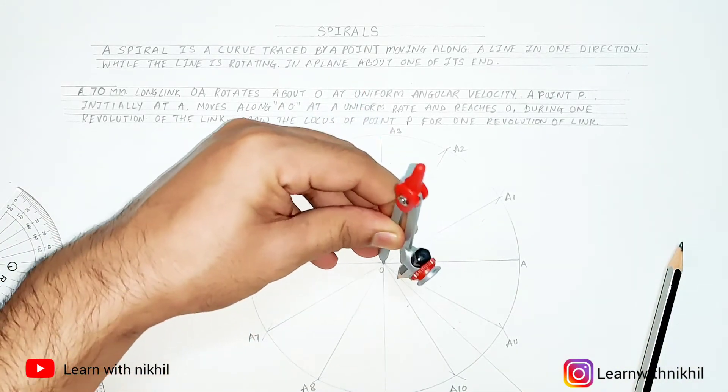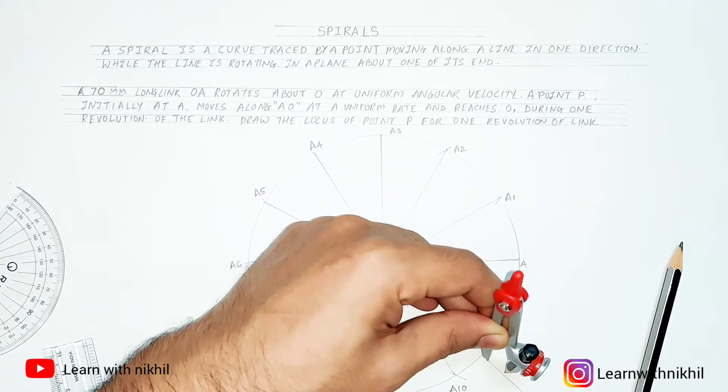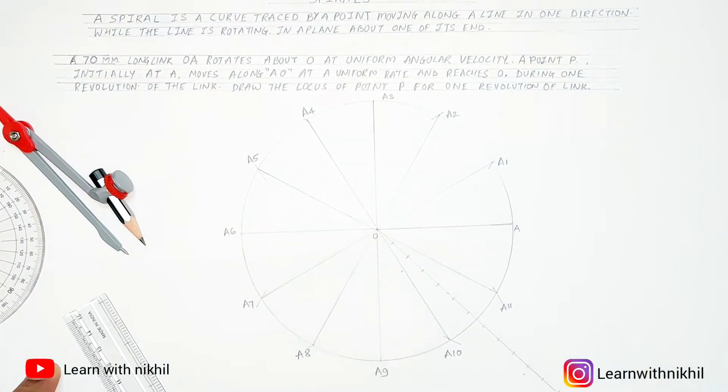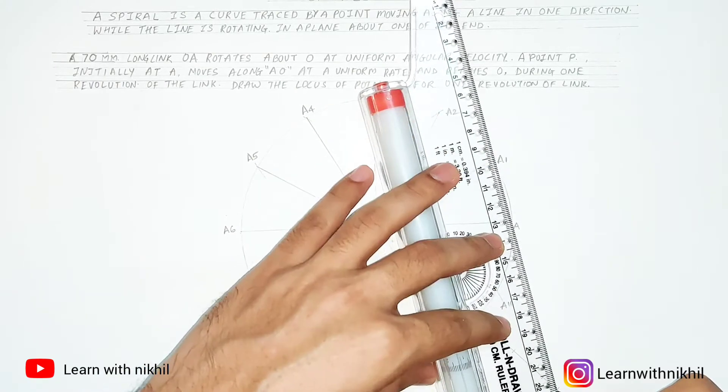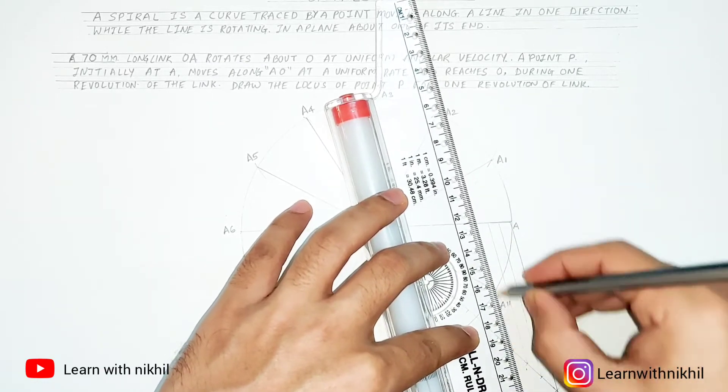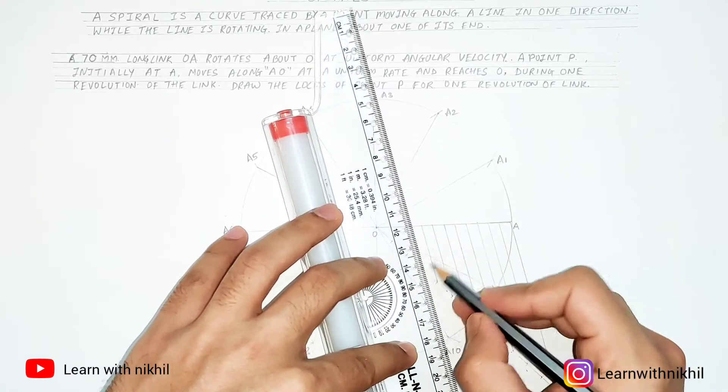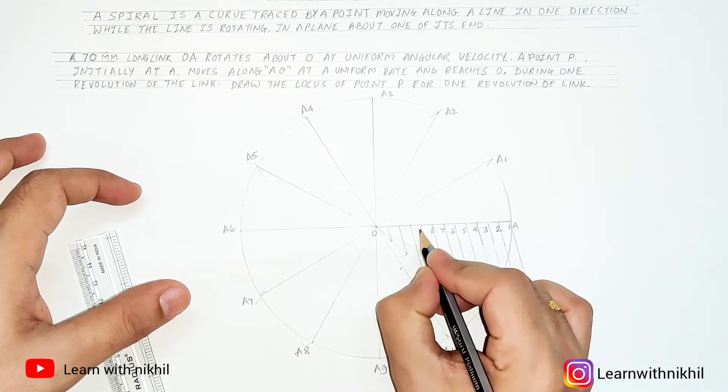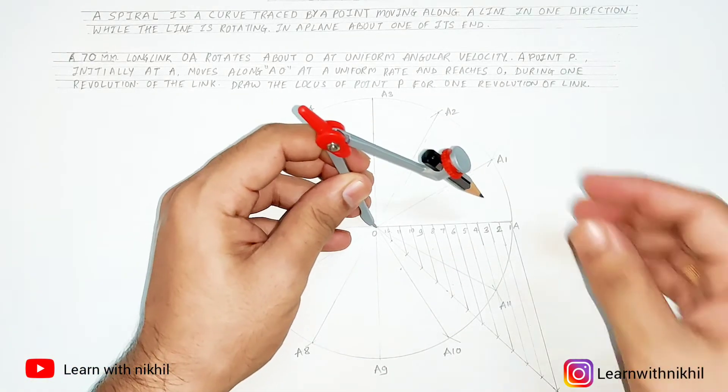The procedure to divide the line into 12 equal parts is the same as you know. Divide the 45 degree line into 12 equal parts, then join the lines end to end, and then with reference to that, draw the parallel lines. You can divide the circle into 6 equal parts, 8 equal parts, as many parts as you want. But as you divide it into 12 equal parts, you have to divide the line into 12 equal parts. If you divide it into 8 equal parts, you have to divide the line also into 8 equal parts.